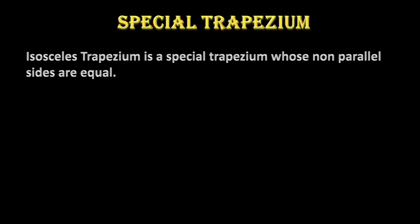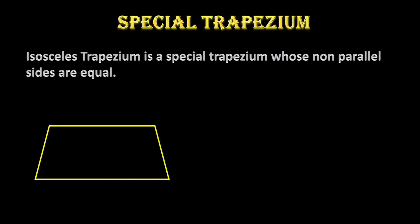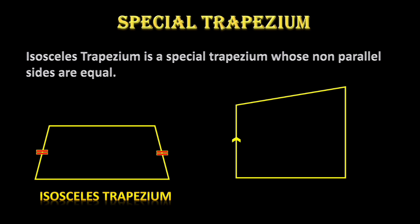What is a special trapezium? An isosceles trapezium is a special trapezium whose non-parallel sides are equal. Another type is the right trapezium. In a right trapezium, one of the angles is a right angle. In a right trapezium, a pair of right angles are always formed.